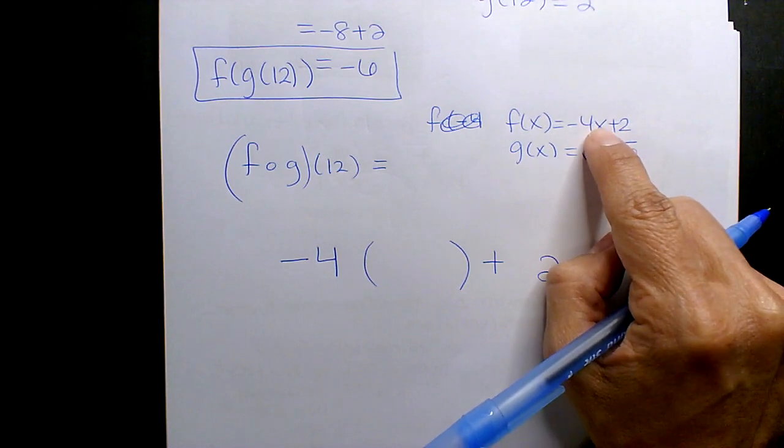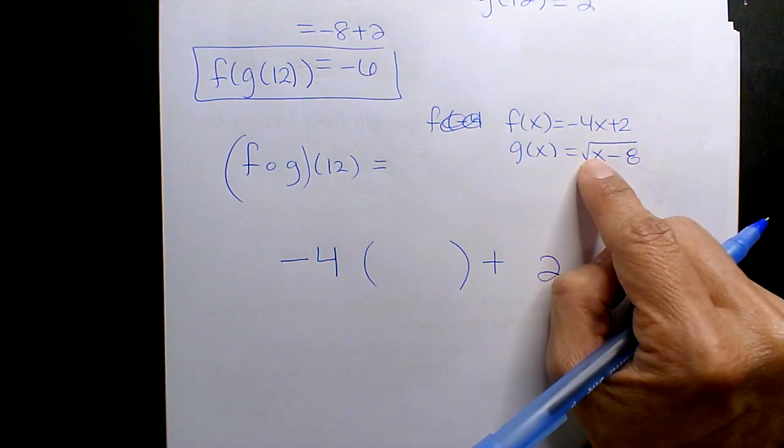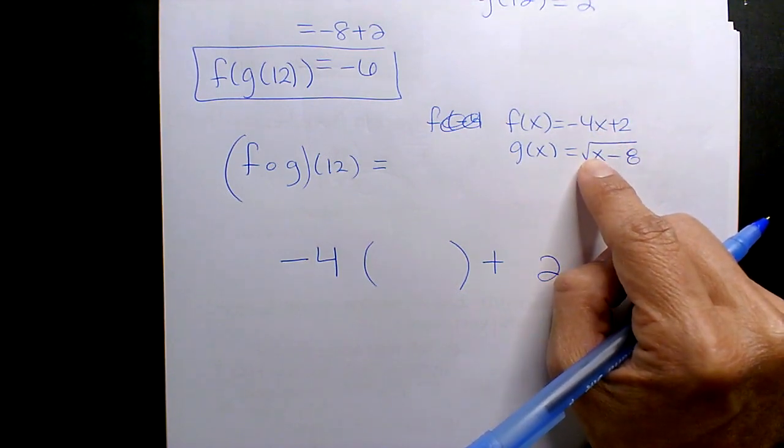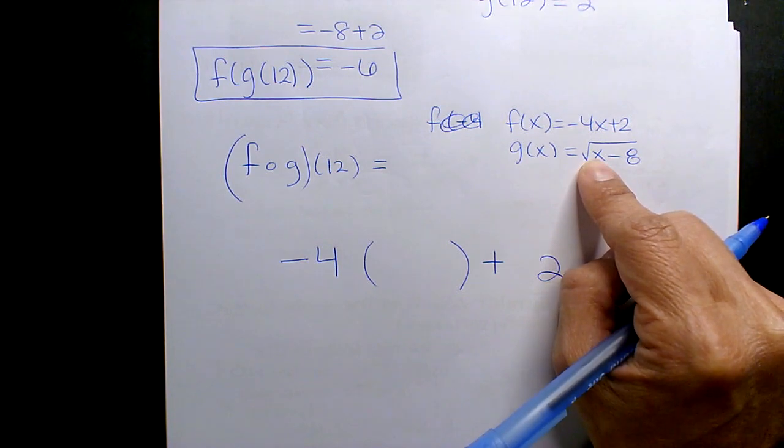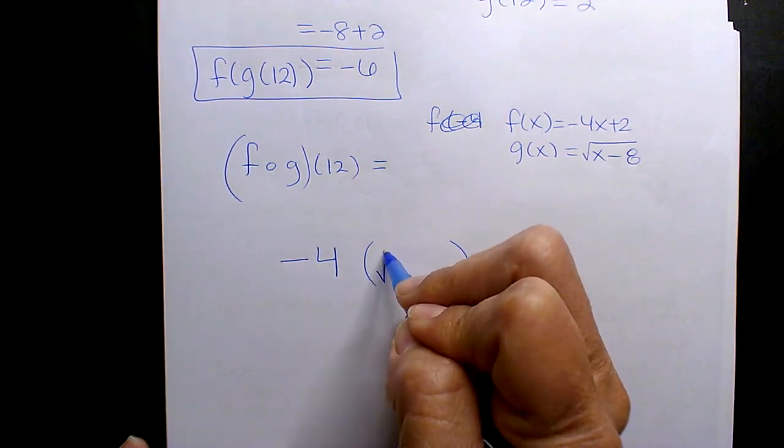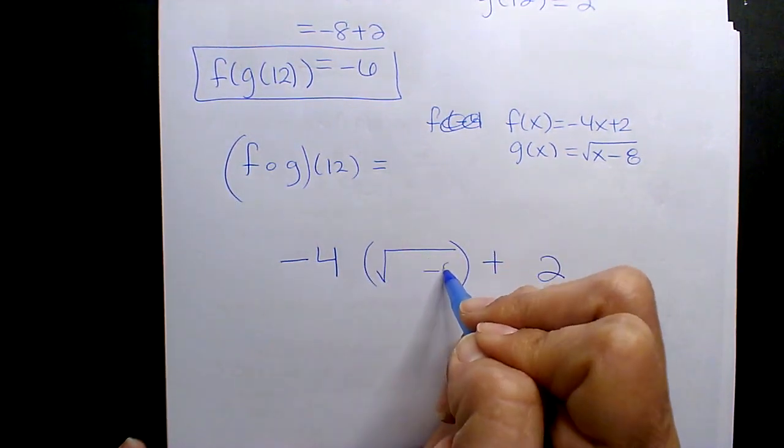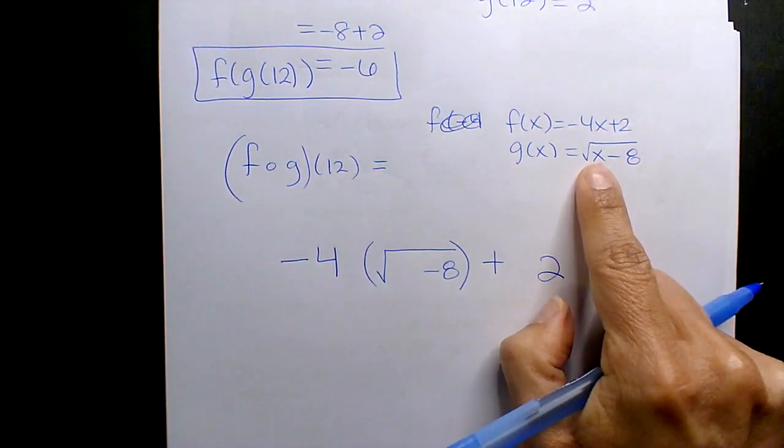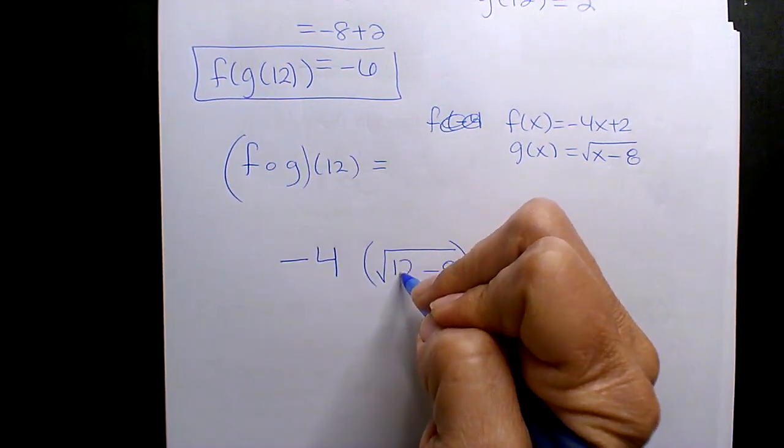But instead of X, I'm substituting the G function. And then instead of X, I'm plugging in 12. So in this substitution of X is the square root of X minus 8. But instead of the X, I'm plugging in a 12.